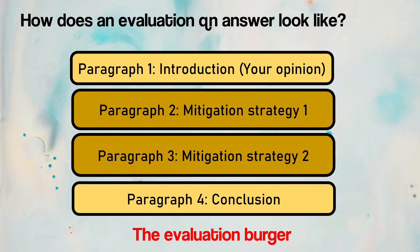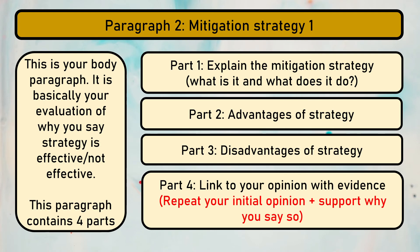For your body paragraphs, it is actually very simple — it is your evaluation of why you say a strategy is effective or not effective. For example, in Jakarta there may be two different mitigation strategies, so you mention strategy one in one paragraph and strategy two in another. Inside each body paragraph, you explain what the mitigation strategy is — for example, channel widening and channel deepening seeks to increase channel capacity and prevent floods.